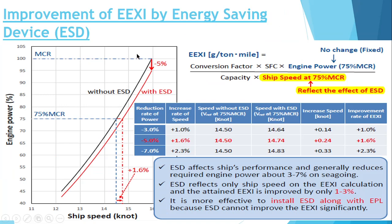The second way of improving the EEXI is the energy saving device. If we install an energy saving device, it will affect the ship speed — the ship speed will ultimately get increased and hence the overall EEXI will get improved. Using an energy saving device results in a reduction of 5% of power with only a marginal increase in speed to 14.74 knots. Installing an energy saving device along with the EPL gives good energy savings. Alone, it only improves EEXI by 1–3%, but it is more effective when installed along with the EPL.